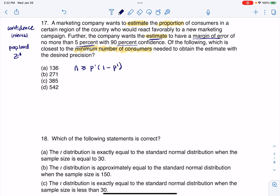N ≥ P'(1-P') times your Z star critical value. I'm just going to put Z squared, there's too many superscripts there. So Z squared over your margin of error squared. So let's start to fill these in.